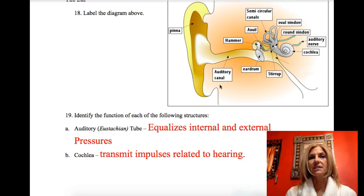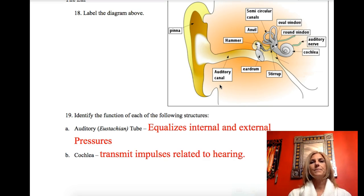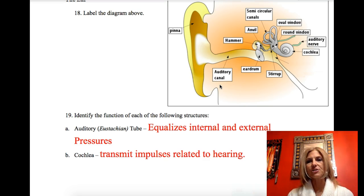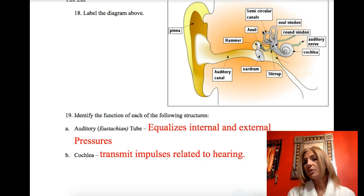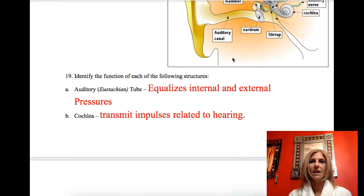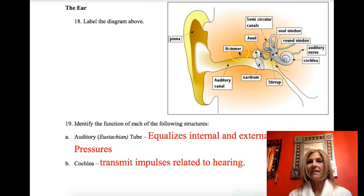I'll let you look at the ear diagram and compare it to your own. You will have an ear diagram on this test, and unlike the eye diagram where I'm asking for functions, this one you're straight-up labeling the diagram from a word bank. I'll most likely use malleus, incus, and stapes.